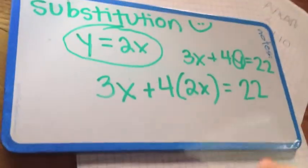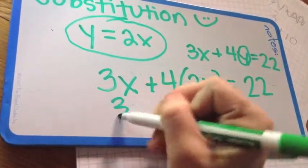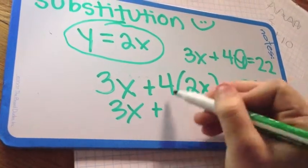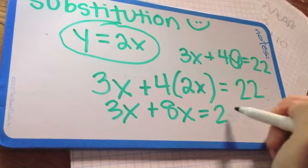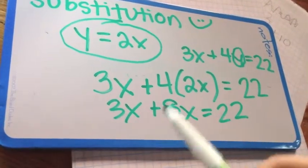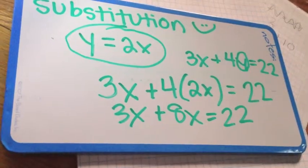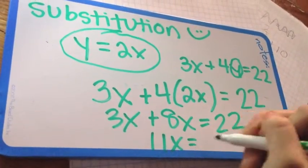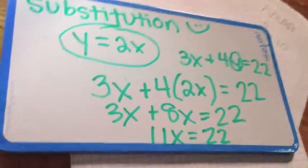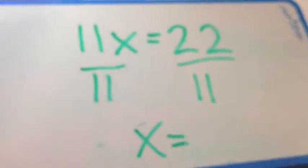We're going to now multiply through. 3x we keep, plus 4 times 2x. So 3x we keep, plus what's 4 times 2x? 8x, good job, equals 22. Now we're going to combine like terms. What's 3x and 8x? 11x. Good job. 11x equals 22. Divide by 11. x equals 2. Good job, Sarah.